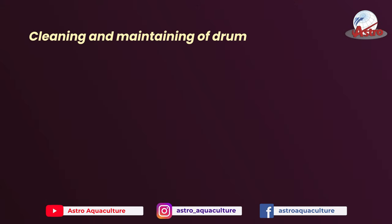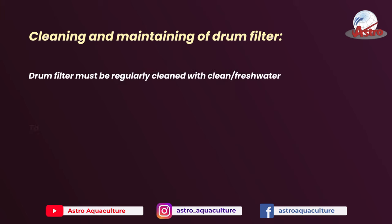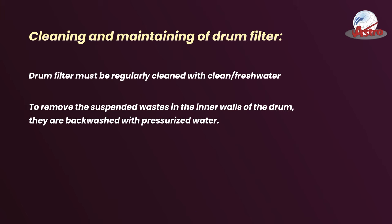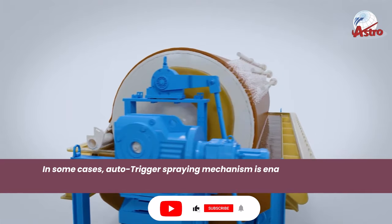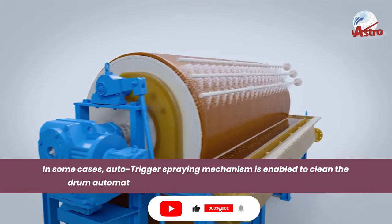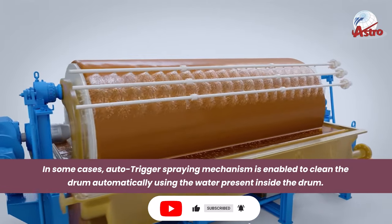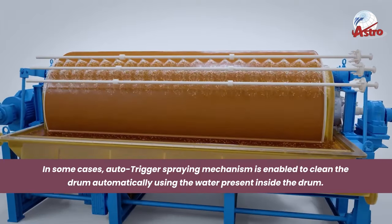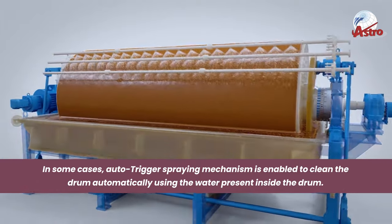Drum filters must be regularly cleaned with clean, fresh water. To remove the suspended wastes on the inner walls of the drum, they are backwashed with pressurized water. In some cases, an auto-trigger spraying mechanism is enabled to clean the drum automatically using the water present inside the drum.